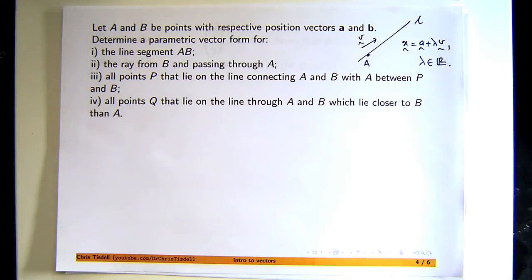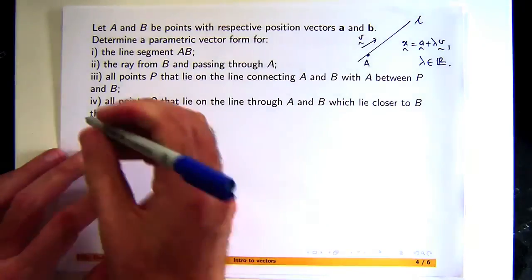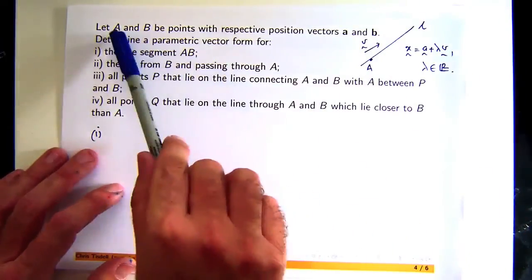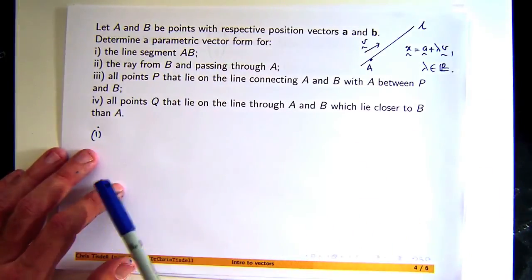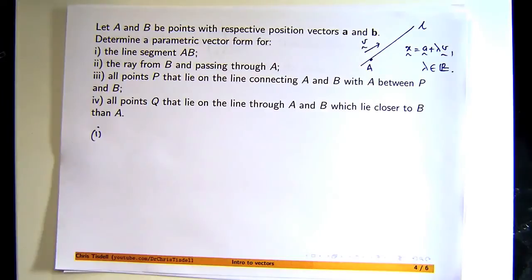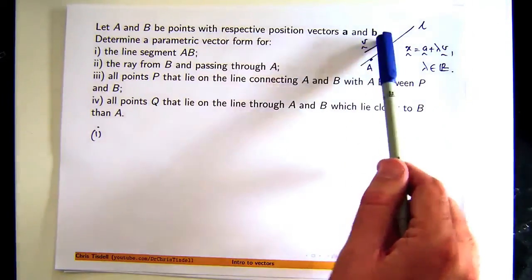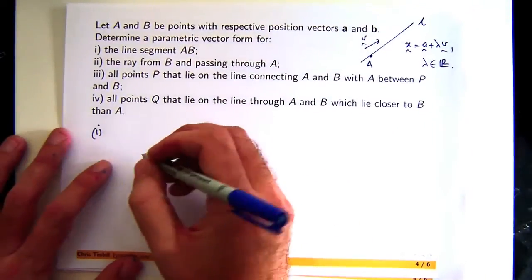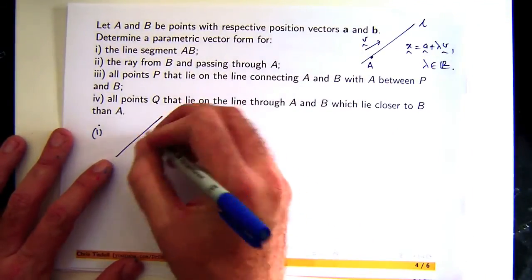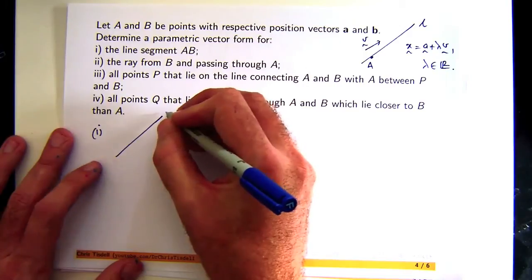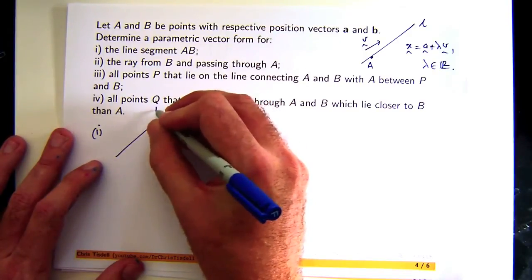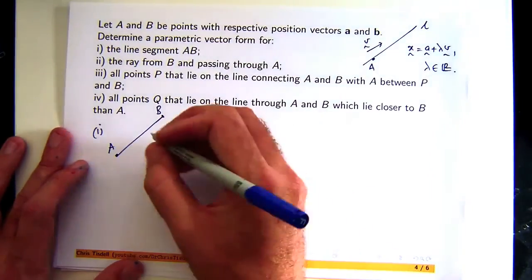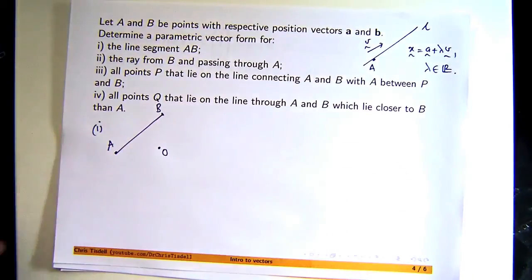So let's do some of these and we'll work our way through it. So in the first part, we've got two points on a line A and B and they have position vectors OA, OB, little a and little b to determine a parametric vector form for the line segment AB. So let me just see if I can draw this in. Let's say this is our line L or line segment L. So here's B, here's A, and let's say here's the origin.